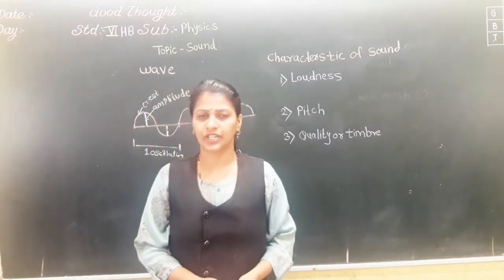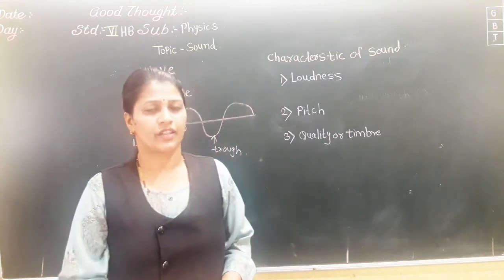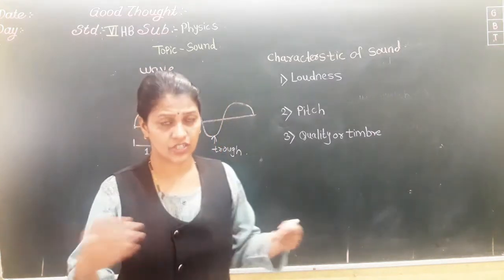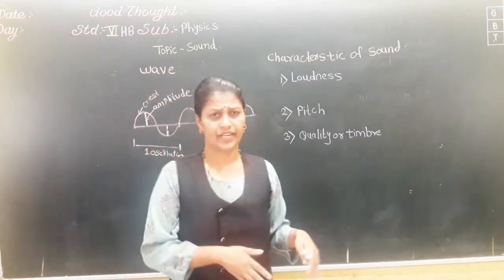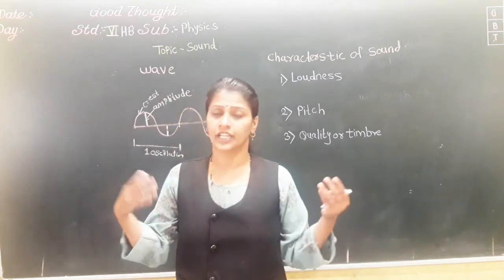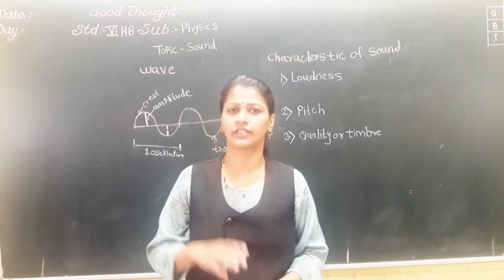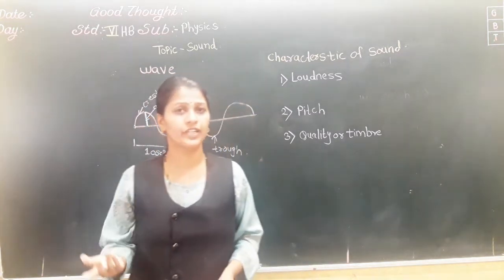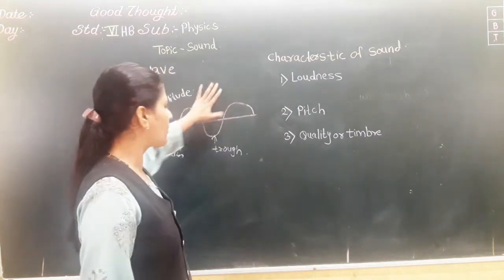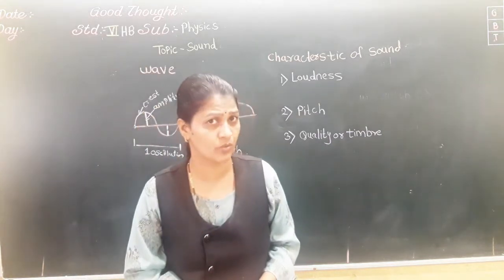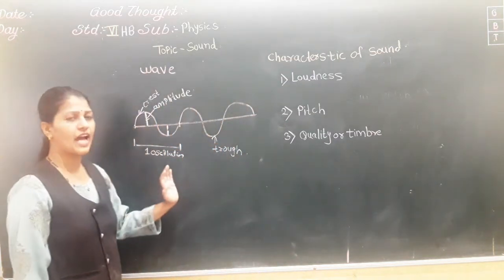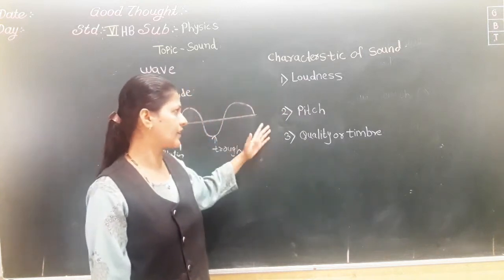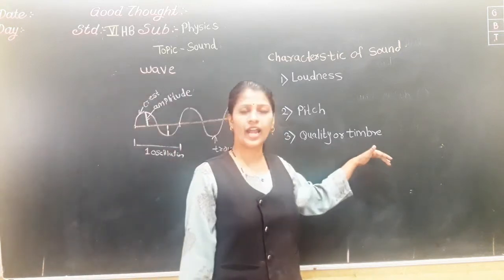Frequency is the number of oscillations completed in a particular time. Every person has a different voice — even animals and birds — everybody vibrates and produces sound, but everybody has a different sound. Because of amplitude and frequency, we can distinguish the characteristics of sound in three terms: loudness, pitch, and quality. Quality is also called timbre.